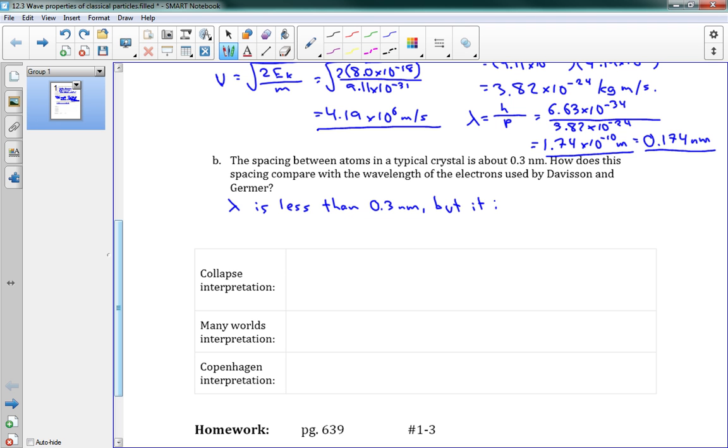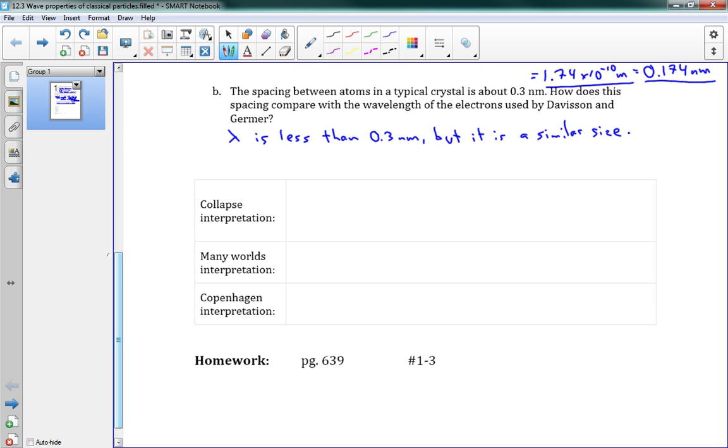But it is a similar size. And remember, this is important because if we want to have good diffraction, thinking back to our unit where we talked about light as a wave, if we want good diffraction, lambda and the spacing should be approximately the same. They should be very close to each other. And the larger lambda is relative to that slit size, the better.